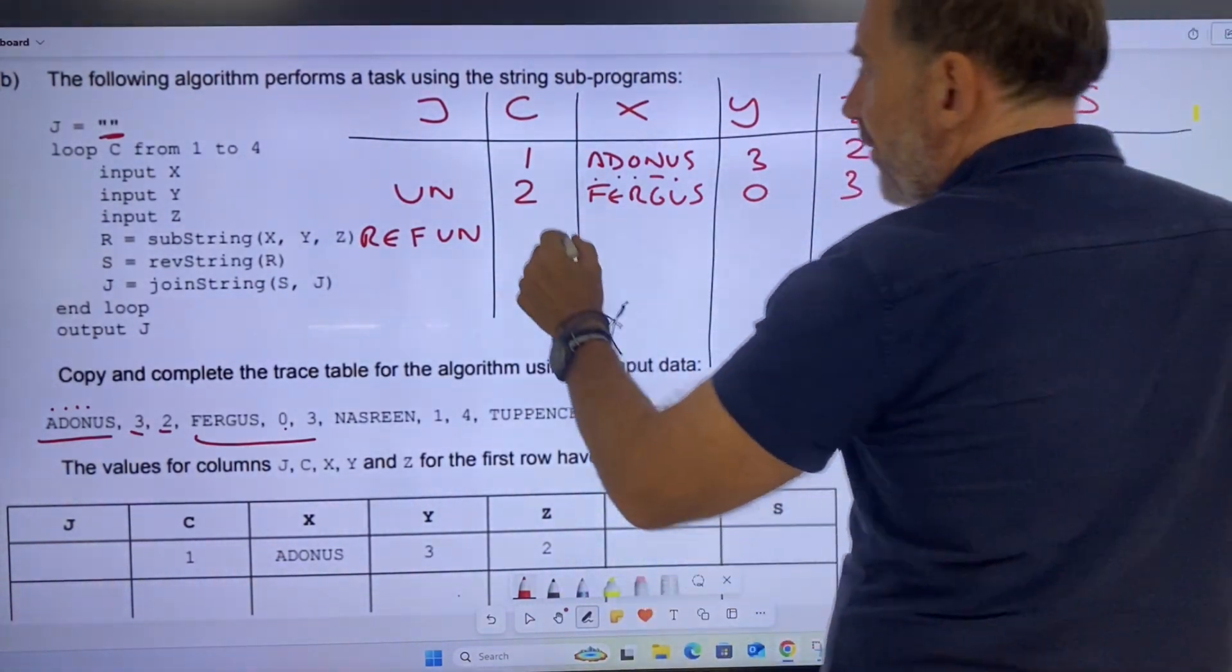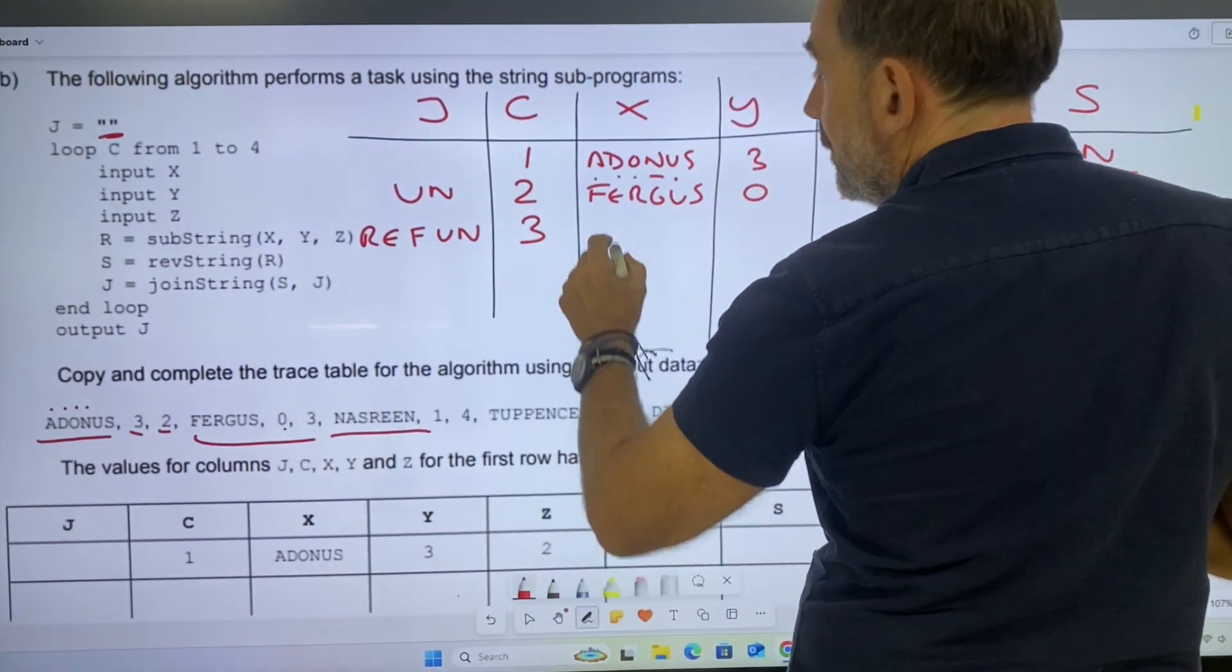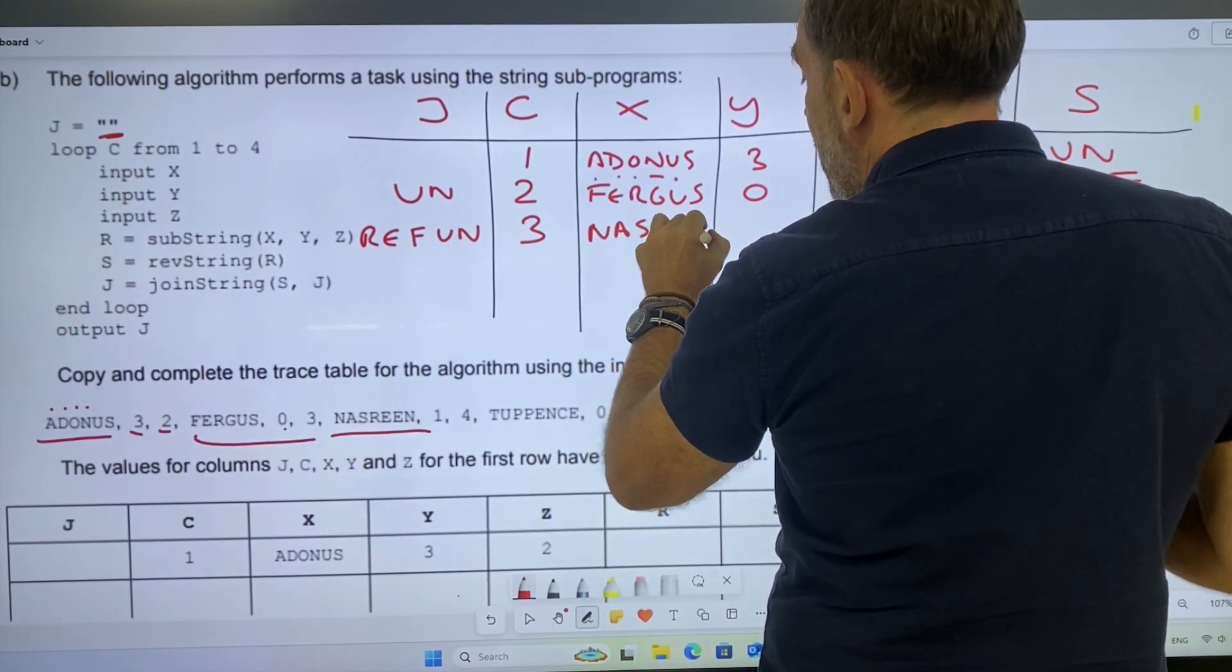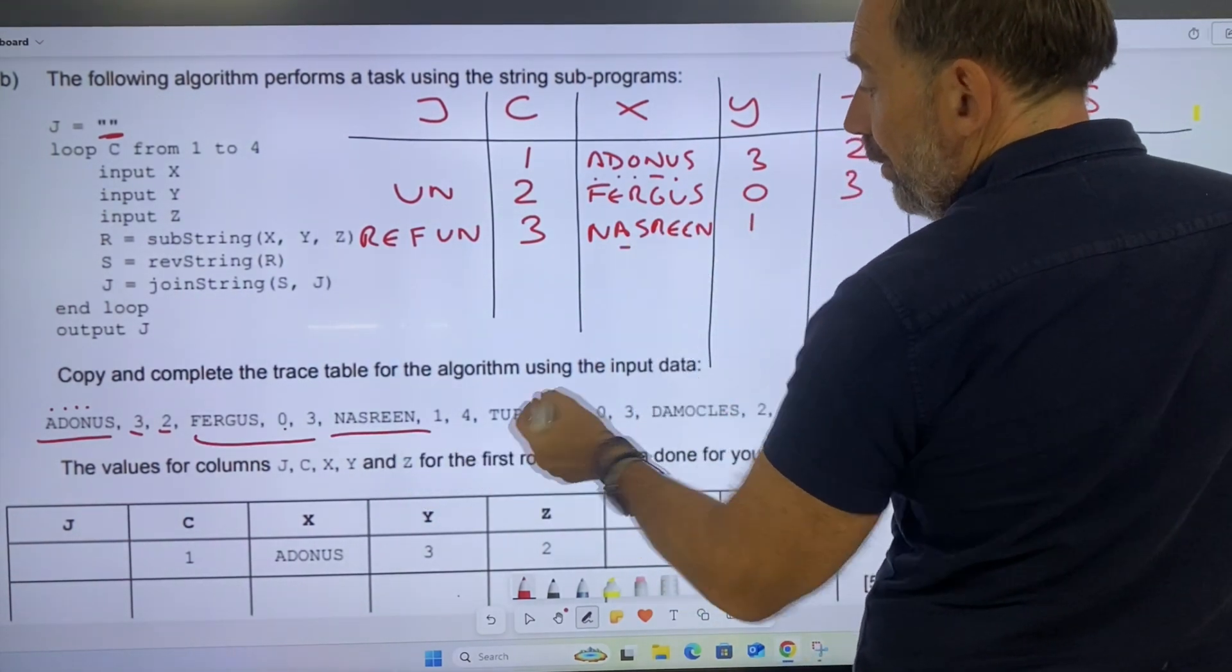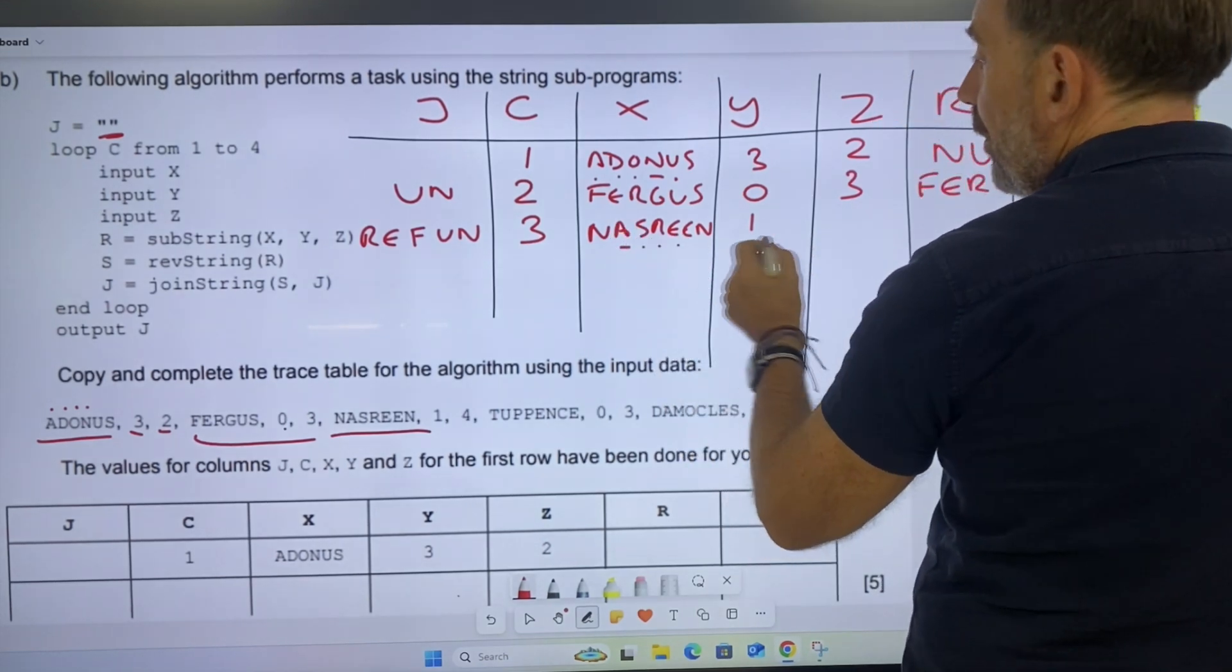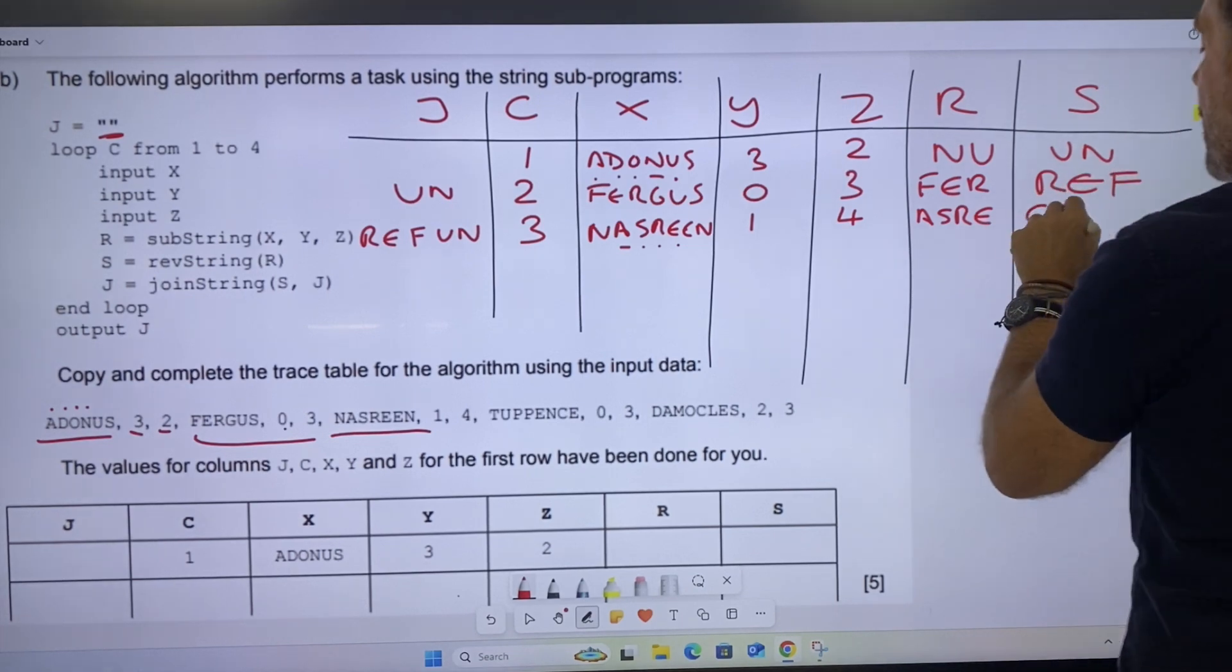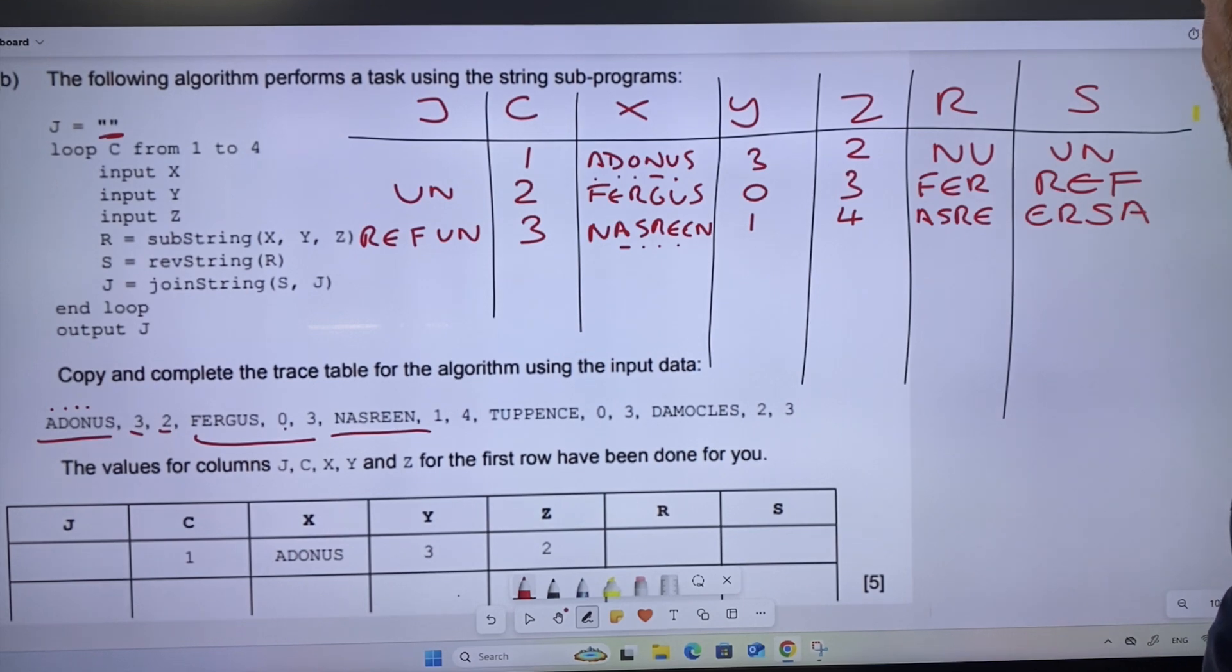Let's try and work out what the next bit is. Three, Nasreen: n, a, s, r, e, e, n. We're going from position 1 to 4, so 1, 2, four values: a, s, r, e, which would be e, r, s, a, something are fun.